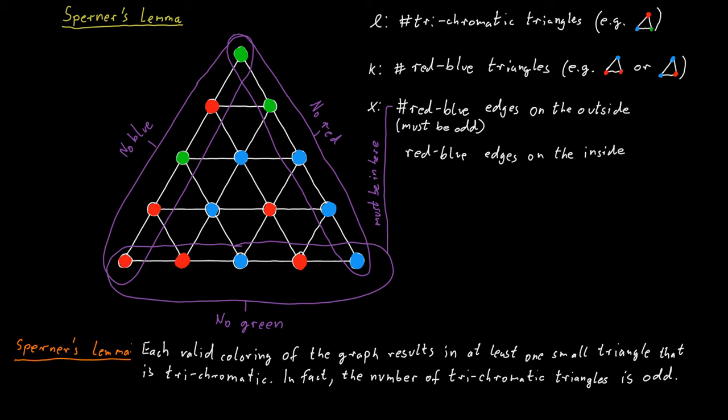Now imagine you walk from left to right and track while you walk along the last color you've seen. We can see that this last seen color switches exactly when we cross a red-blue edge. Each time you cross a red-blue edge you switch colors.